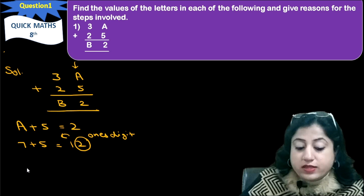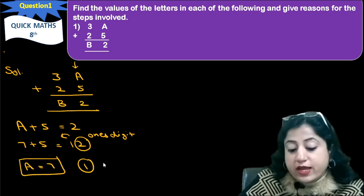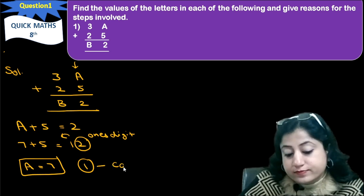So in this case, what do we have? A plus 5. We add 7 and carry. 1 carried on.